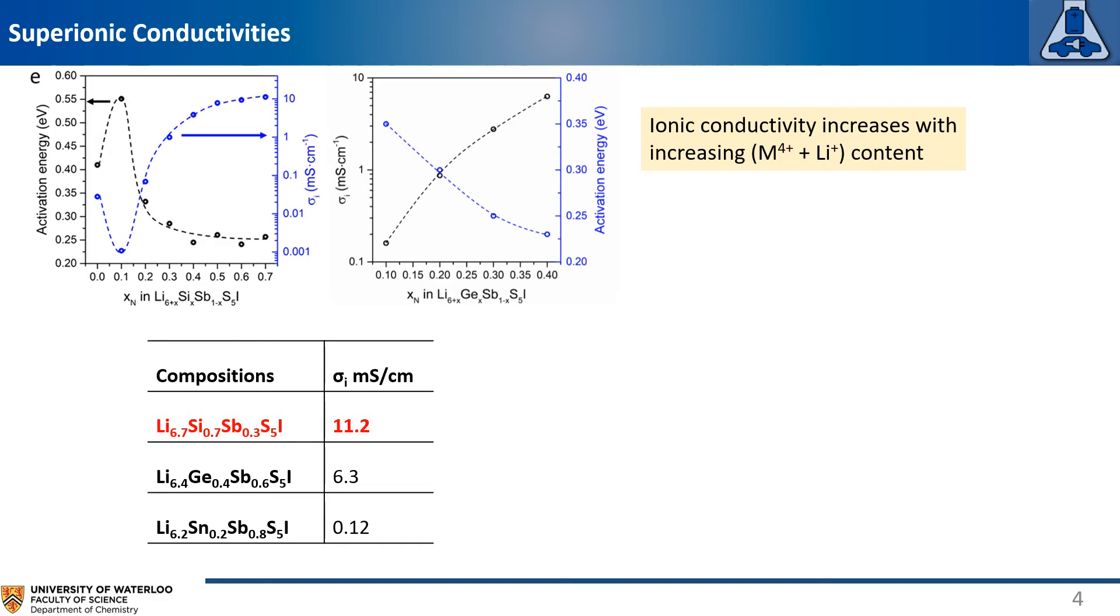The highest ionic conductivity was observed for each series with highest substitution level. For the silicon 0.7 phase, it exhibits highest ionic conductivity of 11.2 mS per centimeter.